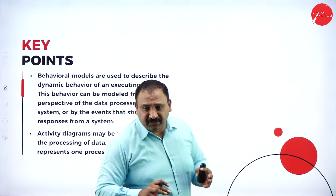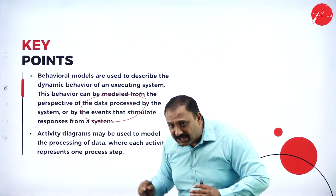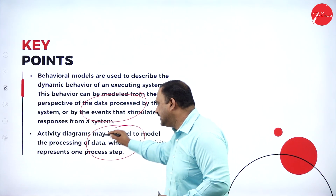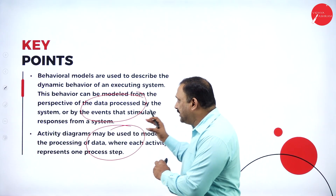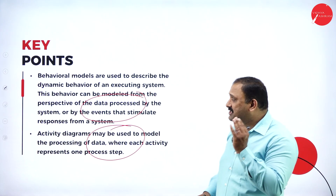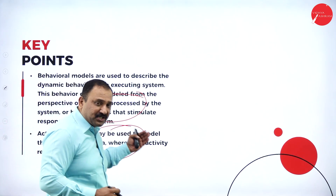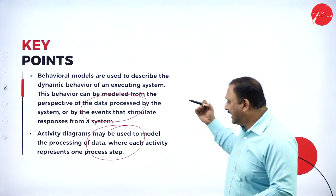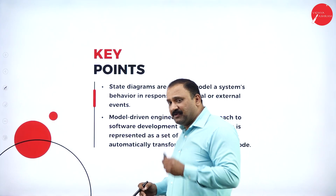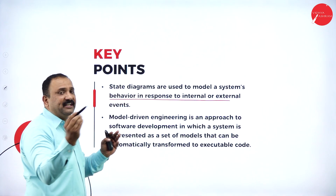Behavioral models are used to represent data processed by the system and the events that stimulate responses. Activity diagrams model the processing of data, with each activity representing one step. The goal is to accept dynamic behavior and execute the system, with data points being central — each activity is represented step by step. State diagrams respond to system behavior from both internal and external factors.